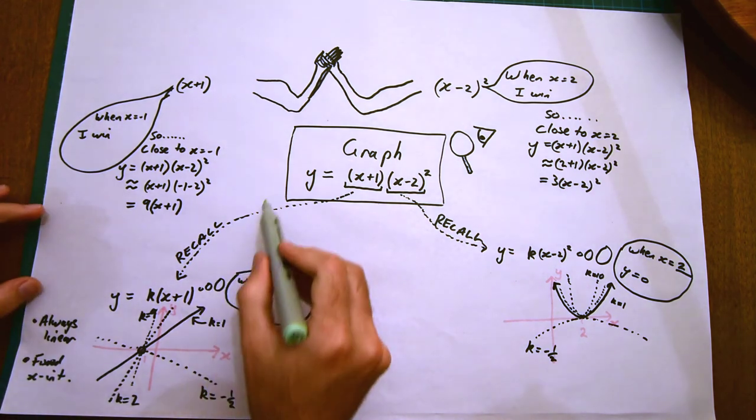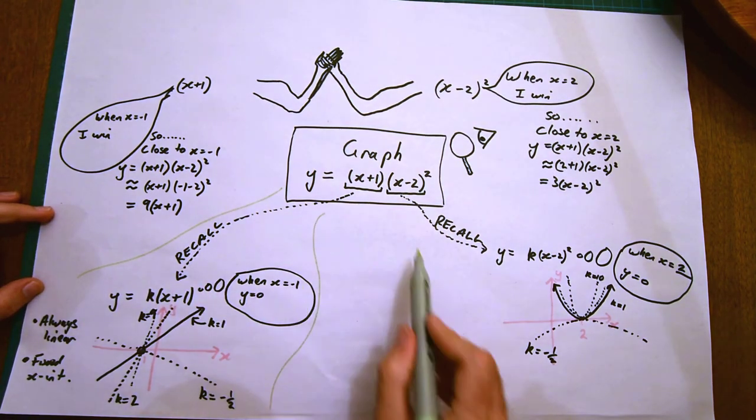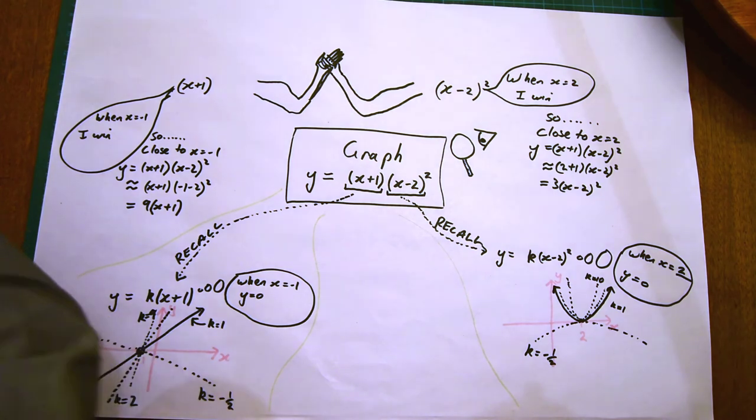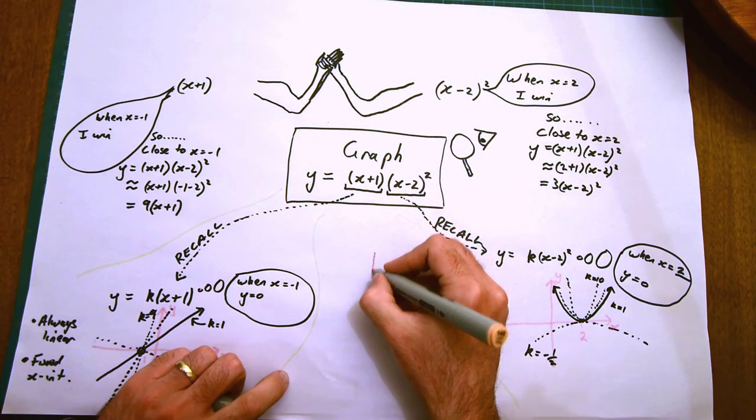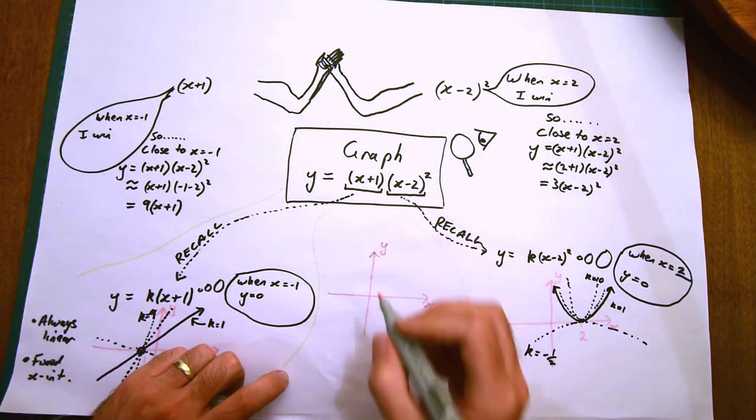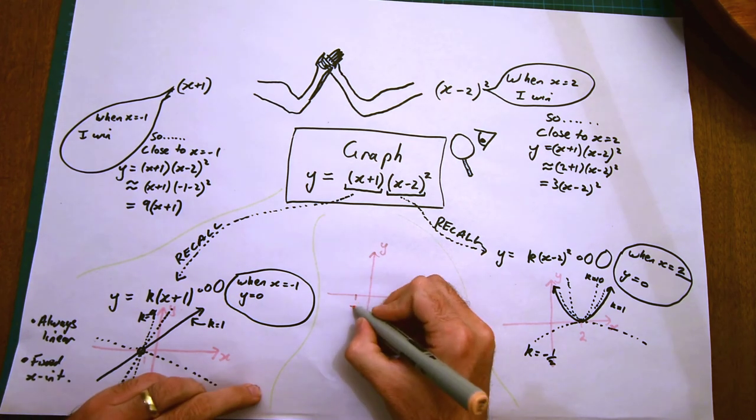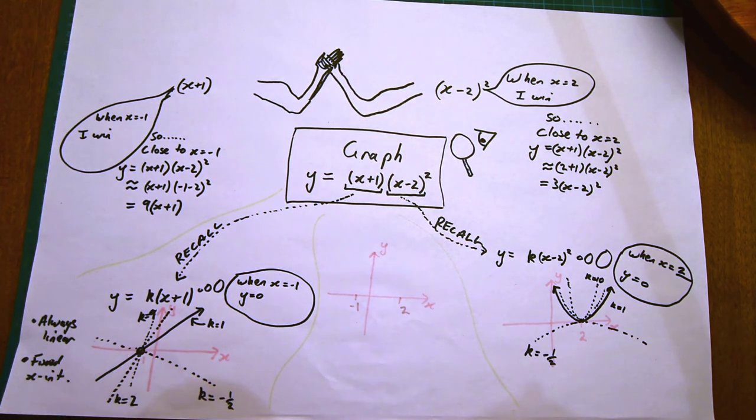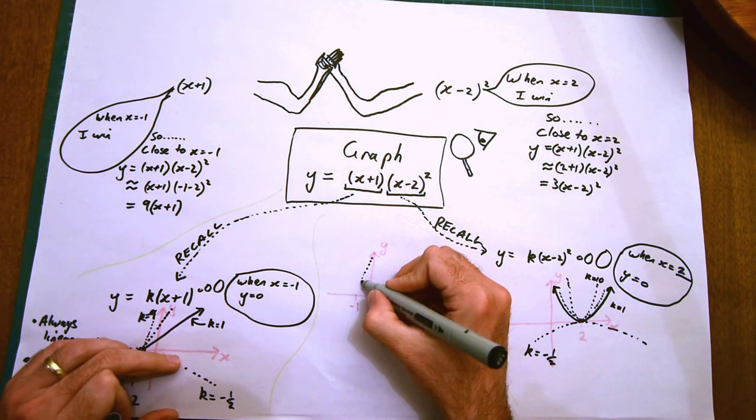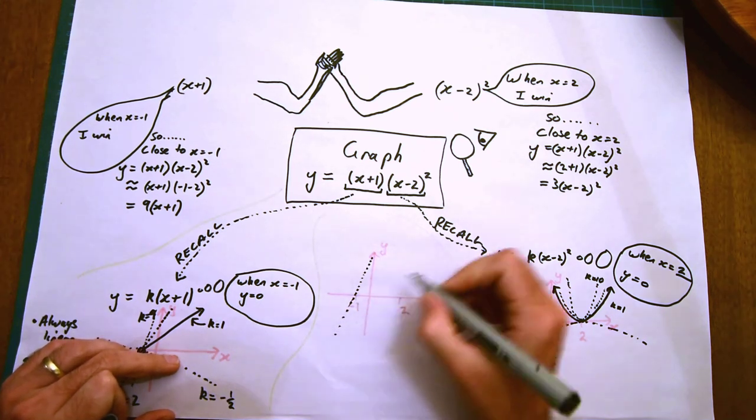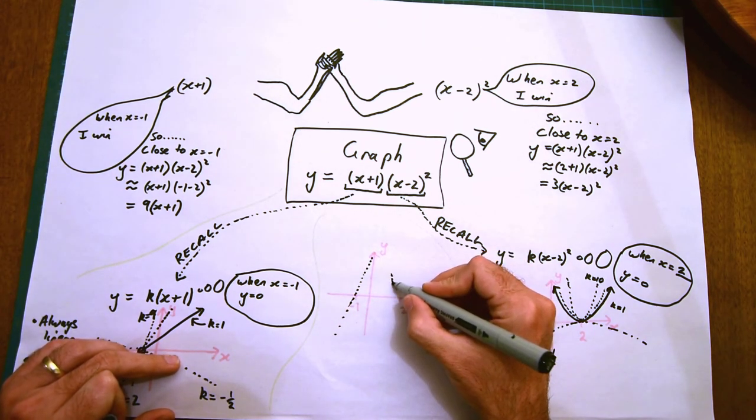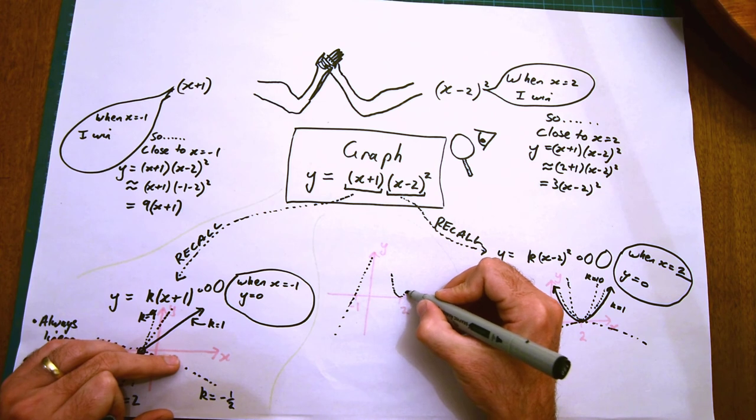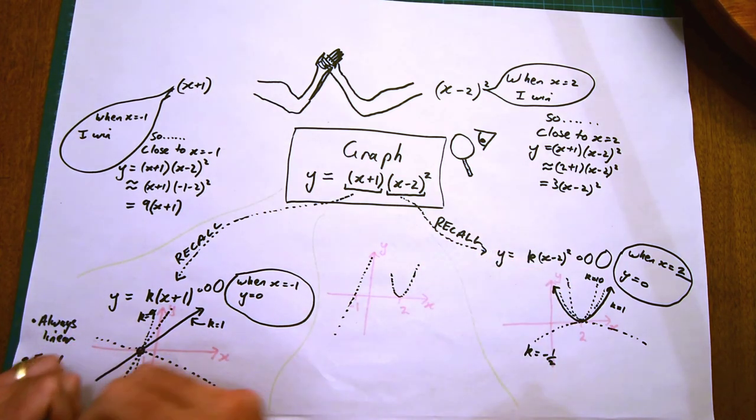Let's now combine all the different things we've done and see if we can't draw a picture of the cubic. At x equals minus 1 and x equals 2, we know the y value has to be 0. Close to minus 1, the linear term will dominate, so I'm going to draw in a straight line with a fairly positive slope. That's our 9 times x plus 1.